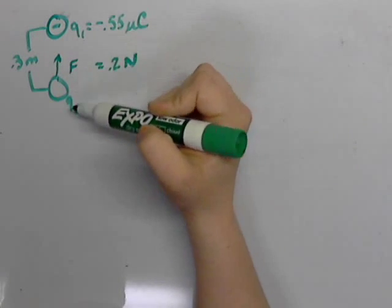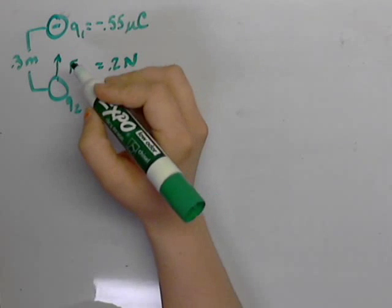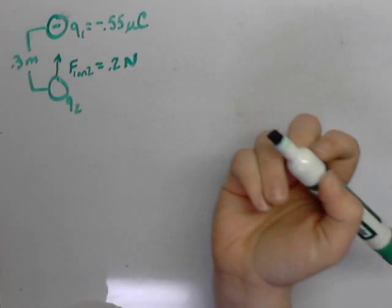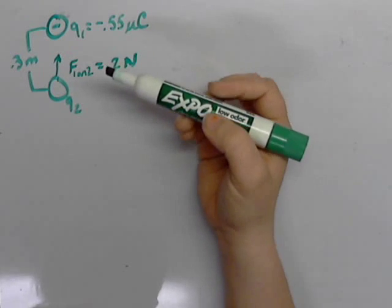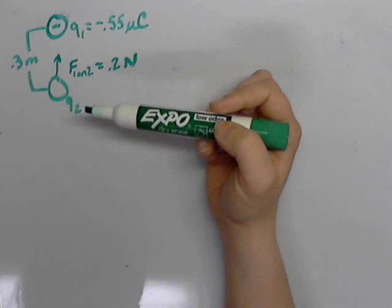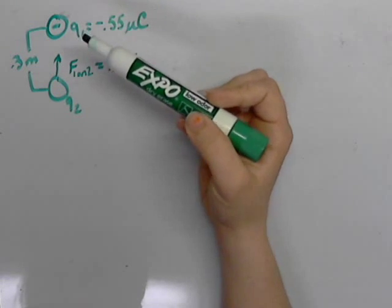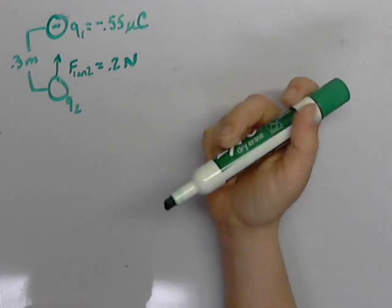Since we have this labeled Q1 and Q2, this is the force of Q1 on Q2. As they're set up, this unknown charge is directly below Q1, and there's a distance between them of 0.3 meters.